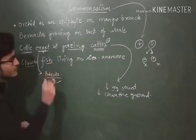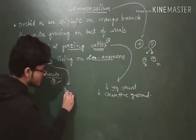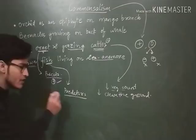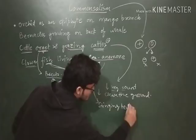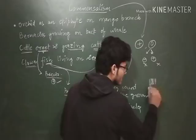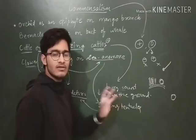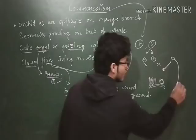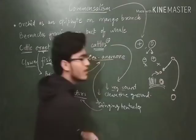The second example: clownfish and sea anemone. They live quite close to each other. The clownfish can be eaten by different kinds of predators, and to be protected from those predators, it goes to the sea anemone. The sea anemone has stinging cells or stinging tentacles which will attack any predator that comes near.